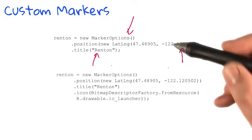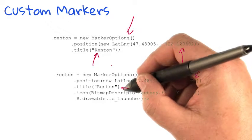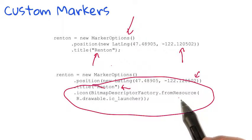Here's an example. Now you can see I have the same position, I have the same title. But I'm now using the icon property, and I'm setting that to a BitmapDescriptorFactory.fromResource.